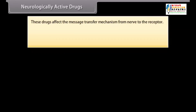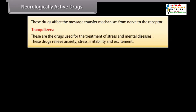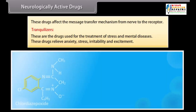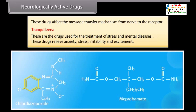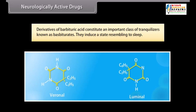Neurologically active drugs affect the message transfer mechanism from nerve to the receptor. Tranquilizers are drugs used for the treatment of stress and mental diseases. These drugs relieve anxiety, stress, irritability, and excitement. For example, chlordiazepoxide and meprobamate are mild tranquilizers. Derivatives of barbituric acid constitute an important class of tranquilizers known as barbiturates; they induce a state resembling sleep. For example, veronal and luminal.